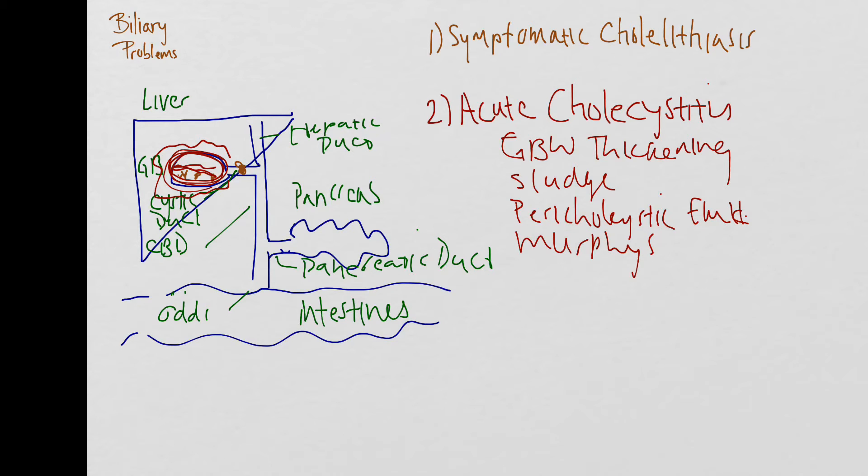If the stone makes it all the way to the common bile duct, your patient now has choledocholithiasis. Because the stone is in the CBD, you'll find common bile duct dilatation. And all of your bile will take the path of least resistance and head back up into the liver. So these patients will often have elevated LFTs.